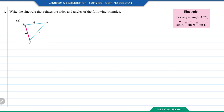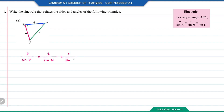For question A, the length P is opposite sine angle P, the length Q is opposite sine angle Q, and the length R is opposite sine angle R. Therefore, the sine rule for question A is: P over sine angle P equals Q over sine angle Q equals R over sine angle R.